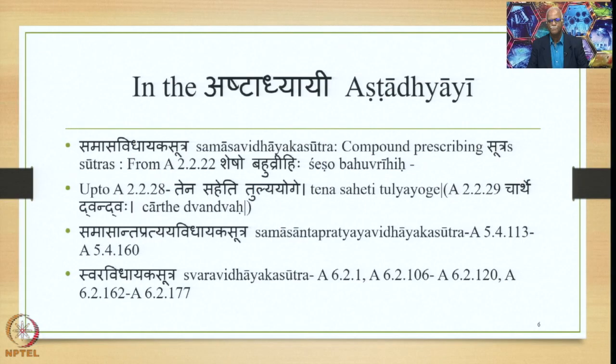In the Ashtadhyayi, the Bahuvrihi Samasa is stated at various places. The Samasa Vidhayaka Sutras are stated in a section that begins with 2.2.23 up to 2.2.28. Part of this section also deals with the Samasaanta Aadeshas and not Pratyayas. The Swaravidhayaka Sutras are stated in 6.2 — 6.2.1 is Bahuvrihav Prakrutya Purvapatam — and then 6.2.106 up to 6.2.120, and then 6.2.162 onwards up to 6.2.177.